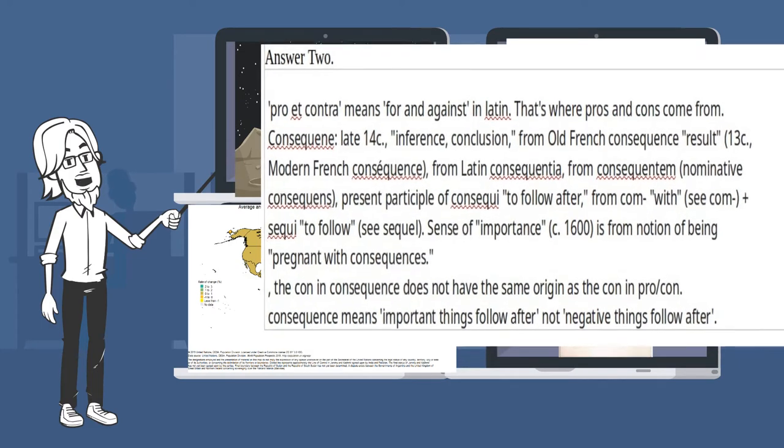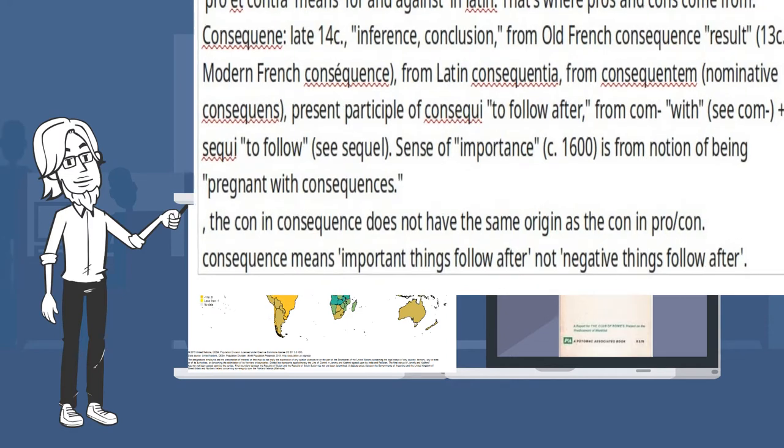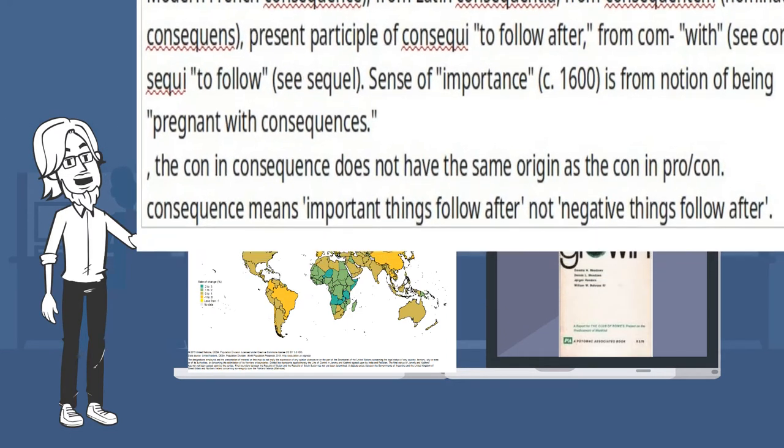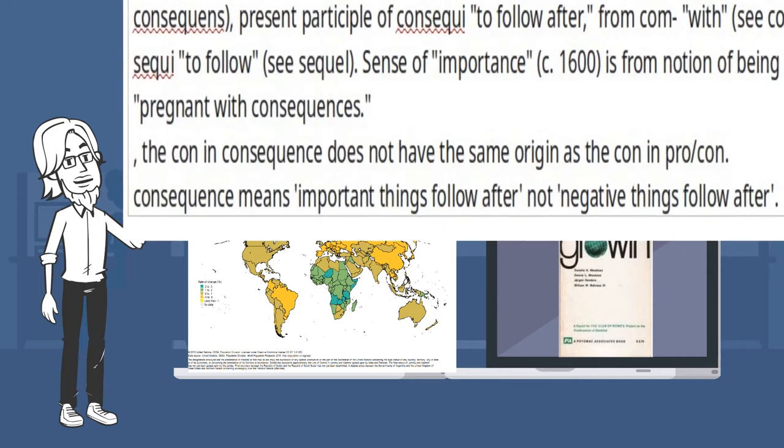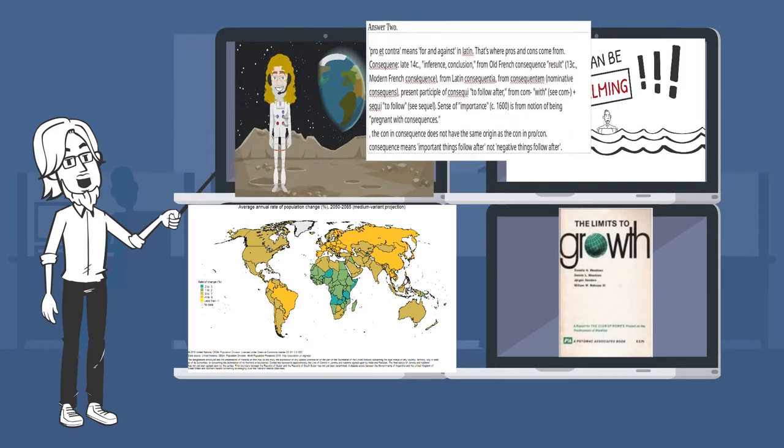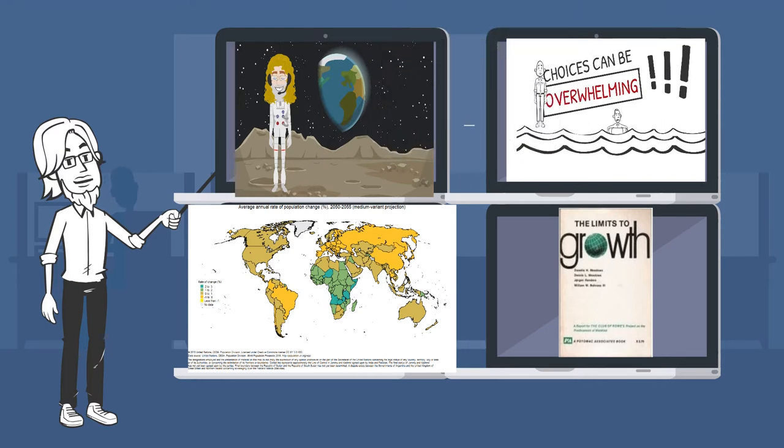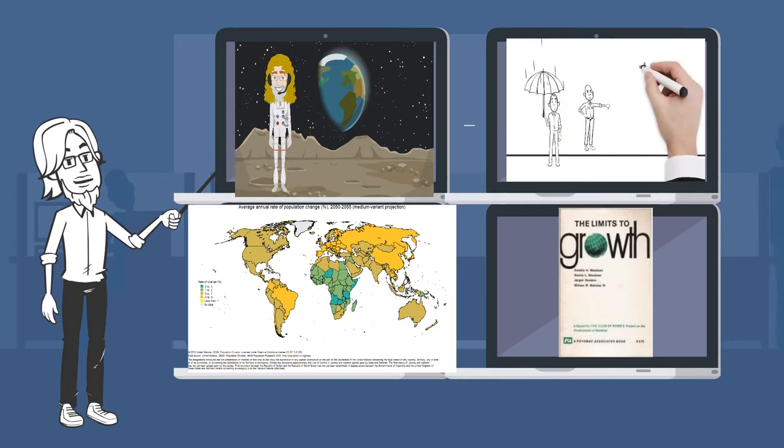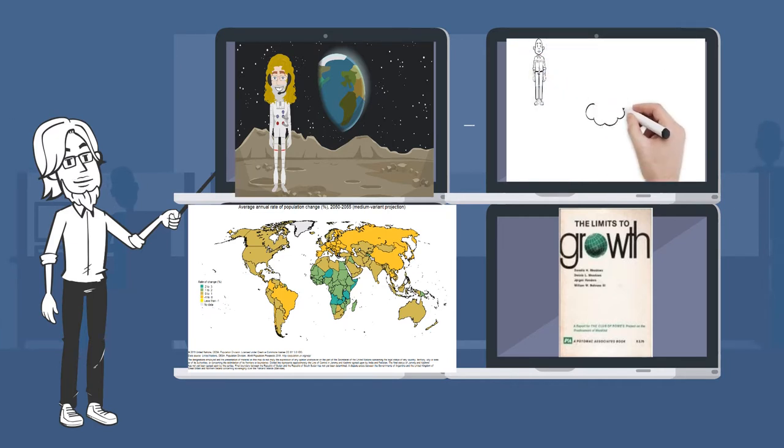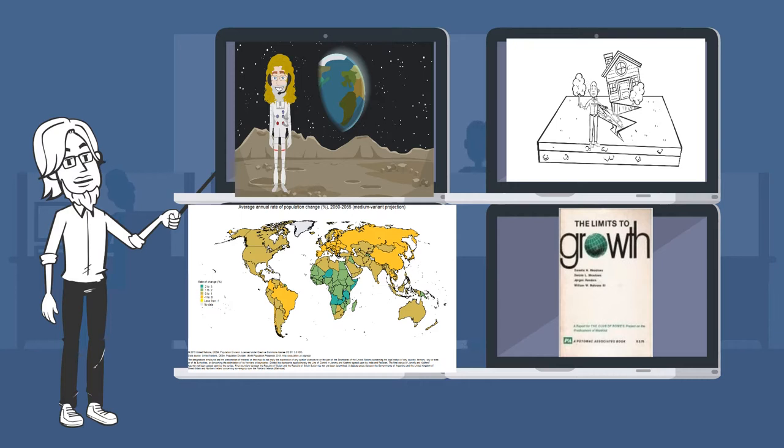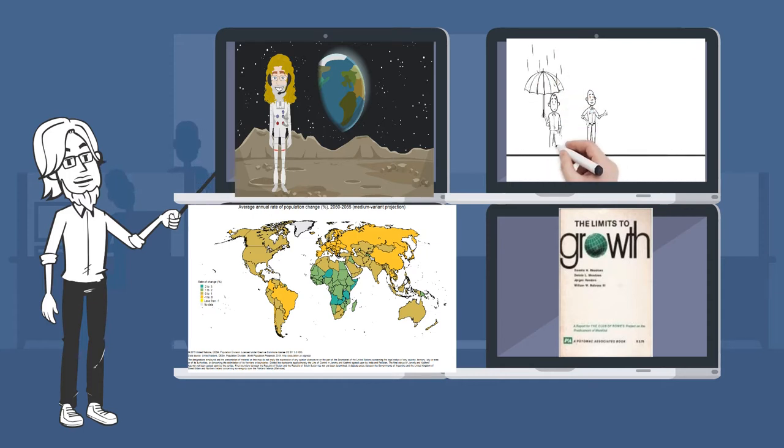Answer 2: Pro et contra means for and against in Latin. That's where pros and cons come from. Consequent: Late 14th century, inference, conclusion, from Old French consequence, results, 13th century modern French consequence, from Latin consequentia. The con in consequence does not have the same origin as the con in pro/con. Consequence means important things follow after, not negative things follow after.